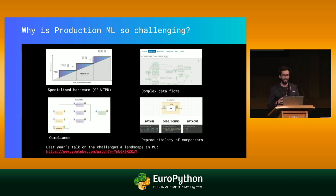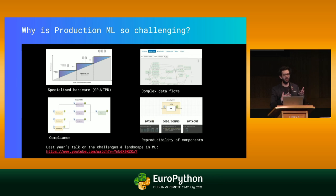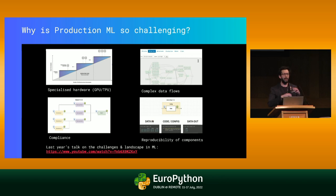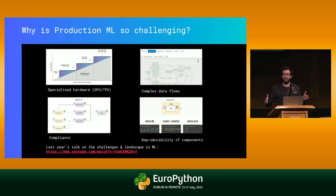Let's take a step back and remember why production machine learning is so hard. We're bringing in all the challenges from traditional software but adding machine learning on top — specialized hardware scheduling, whether it's GPUs, TPUs, large amounts of memory. You also have complex data flows. You don't just have a single machine learning model but machine learning systems, with components that may affect other components downstream or upstream.